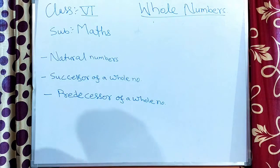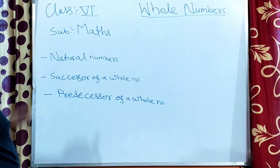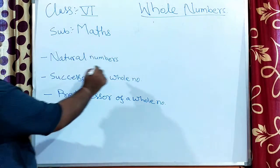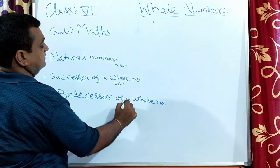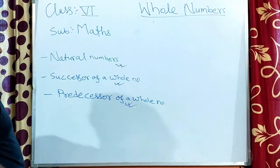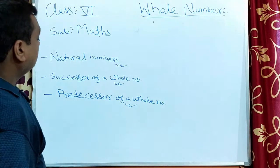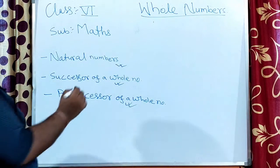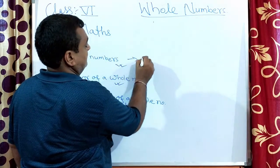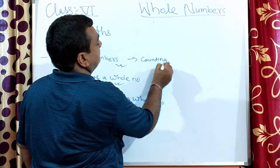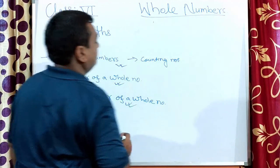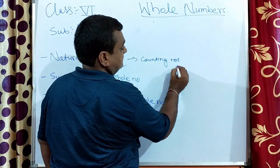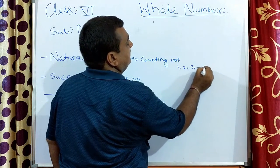In this topic we have to study natural numbers, successor of a whole number, and predecessor of a whole number. Natural numbers are all counting numbers. Counting numbers start from one, two, three and so on up to infinity.